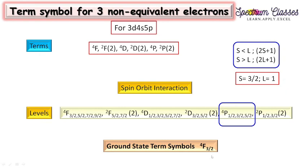So the ground state term symbol is 4F3/2. By comparing this video with my previous video on p3 electrons, you can understand how to calculate term symbols for equivalent and non-equivalent electrons. I hope you find this video useful — please like, share, and subscribe. Thank you for watching.